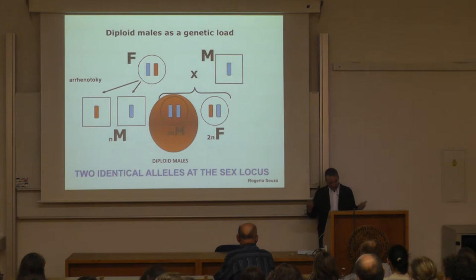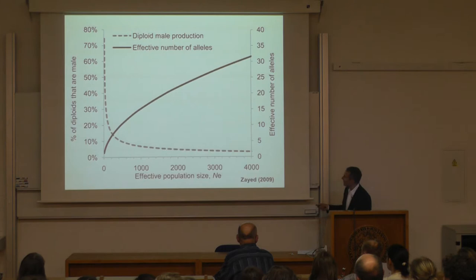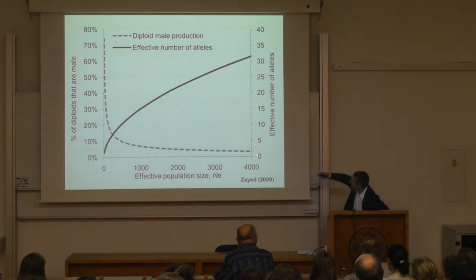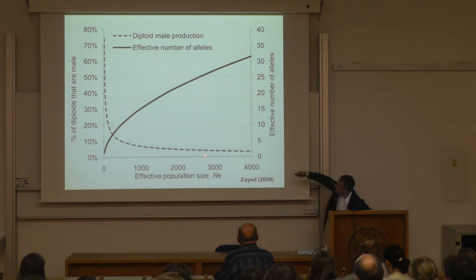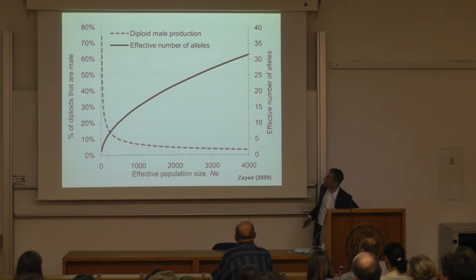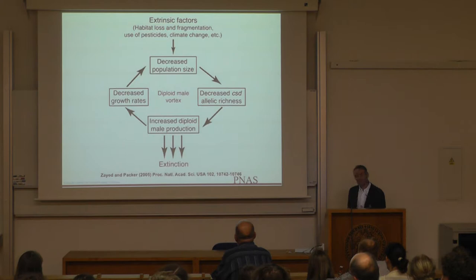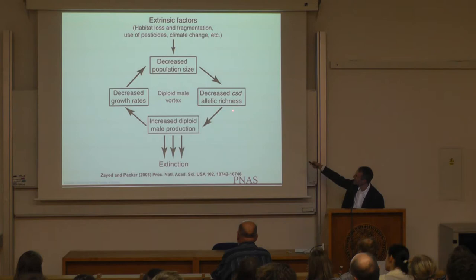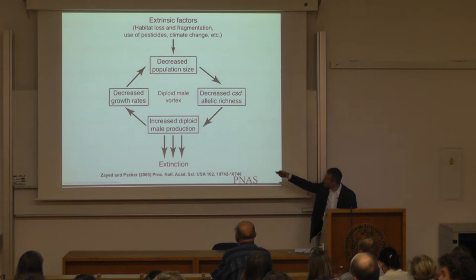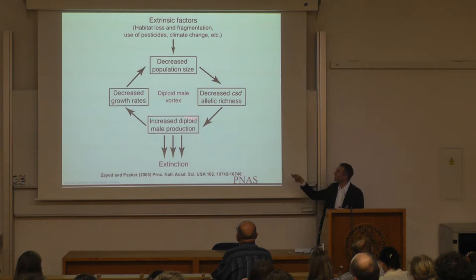Diploid males arise through low allelic diversity at the sex locus — most obviously through brother-sister mating, but also simply through small population size. As effective population size decreases, diploid male production rises considerably. Zayed and Packer proposed that haplodiploids may suffer from a diploid male extinction vortex: decreased population size → decreased CSD allelic diversity → increasing diploid male production → decreasing growth rates → further decreasing population size — a vicious circle. This was proposed back in 2005.